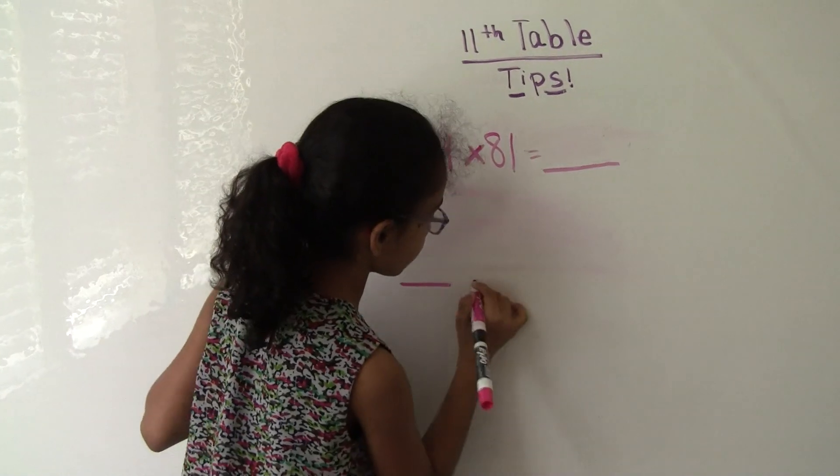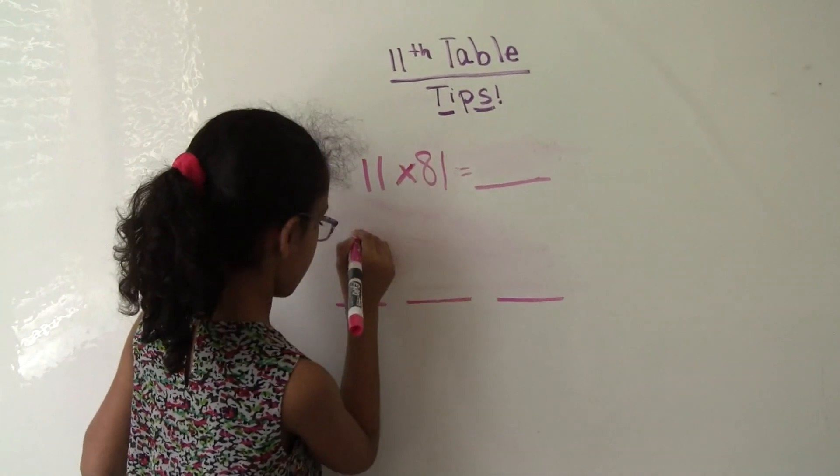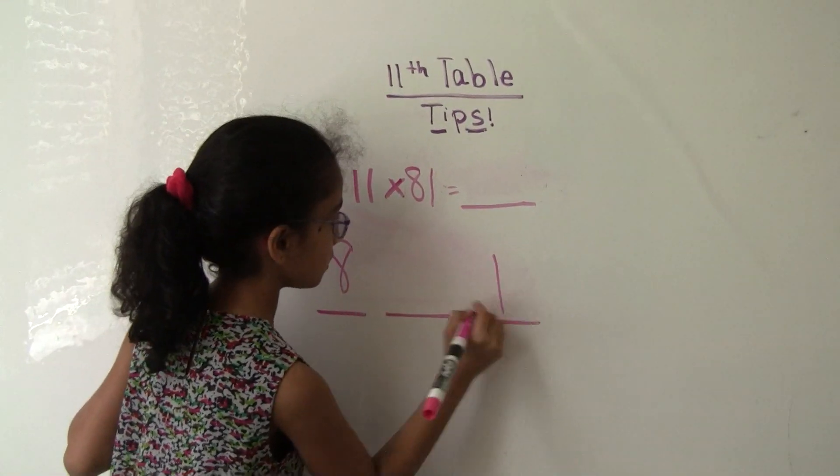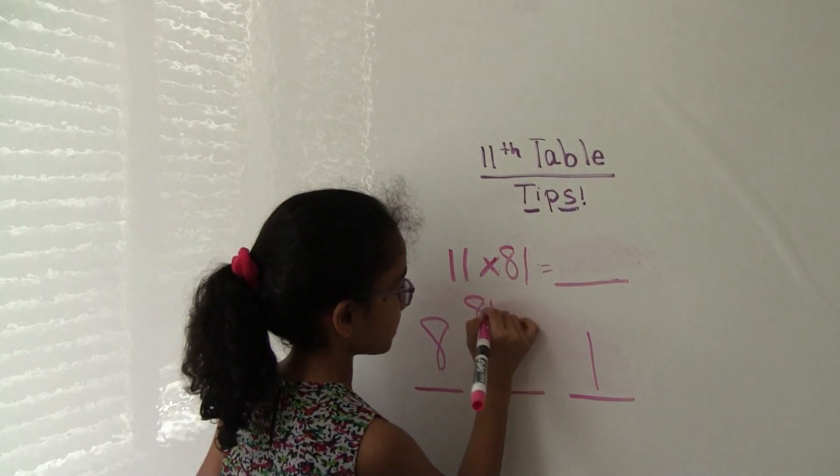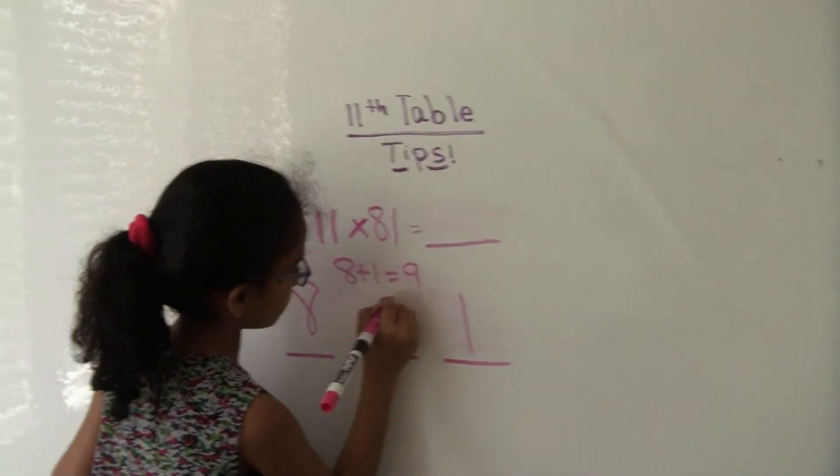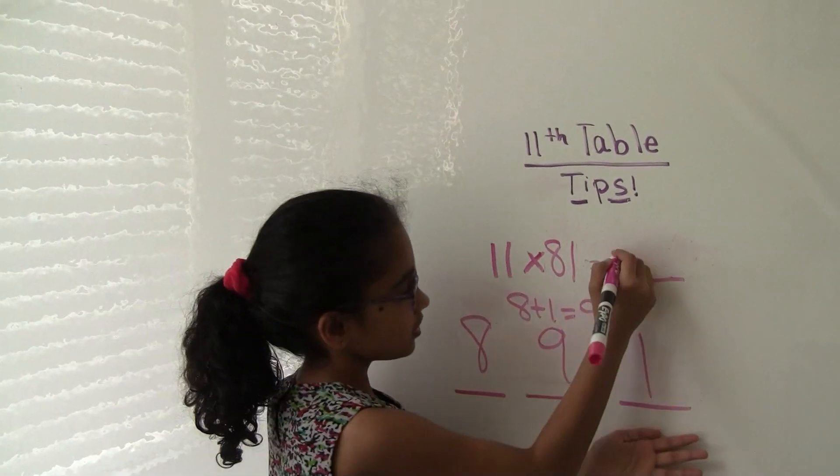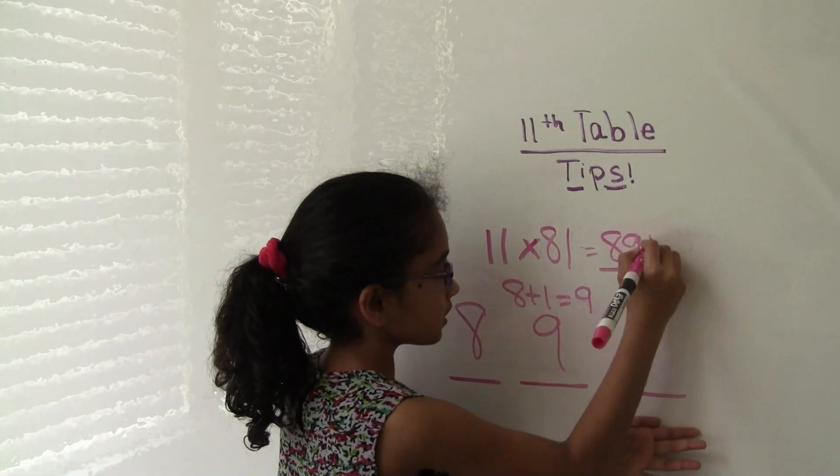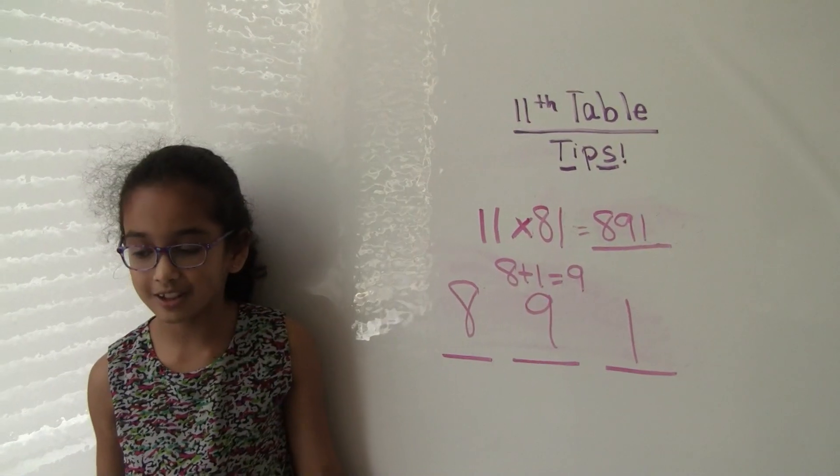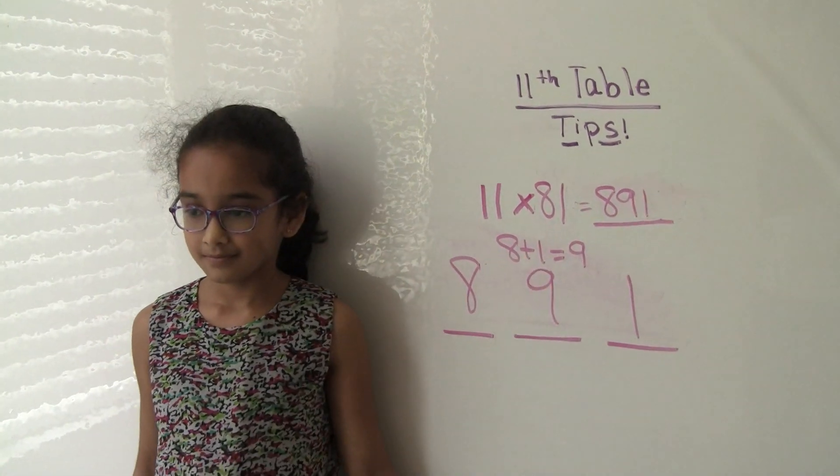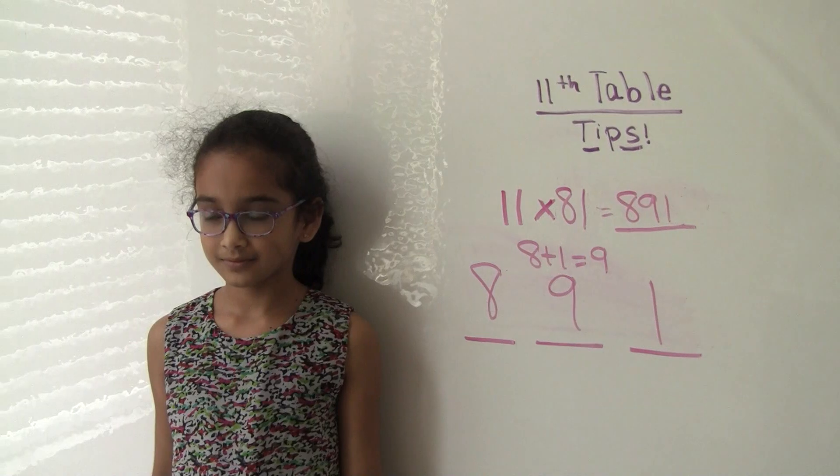Okay, so let's try 11 times 81. So take your 3. 8 and 1. 8 plus 1 equals 9. So put your 9 there. Answer is 891. Okay, so let's try 1 again. I'm going to give you 5 seconds to take your calculator.